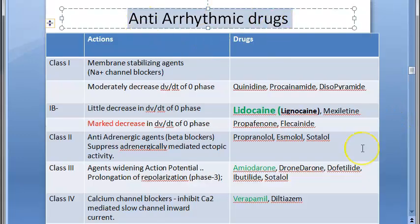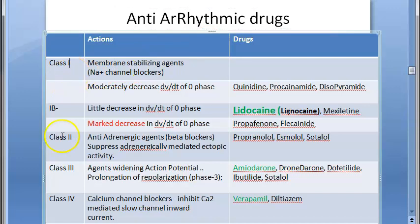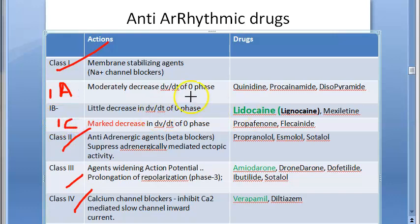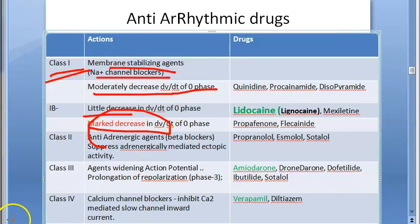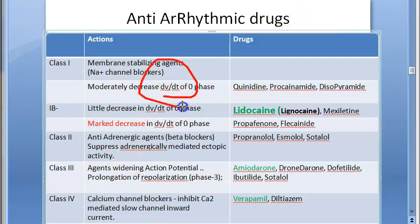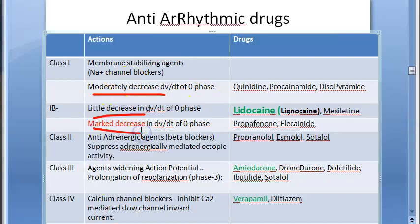Anti-arrhythmic drugs are divided into classes 1, 2, 3, and 4. Class 1 is further divided into 1A, 1B, and 1C based on the degree of decrease in dV/dt of phase 0 — moderate decrease, little decrease, and marked decrease respectively. Class 1 drugs are membrane-stabilizing agents, also called sodium channel blockers.